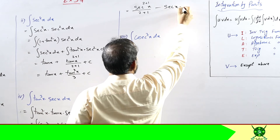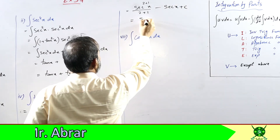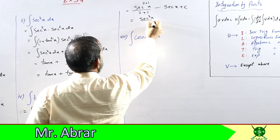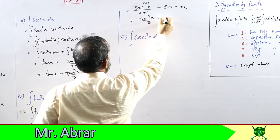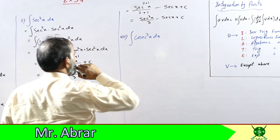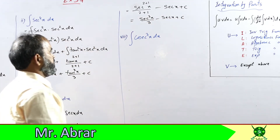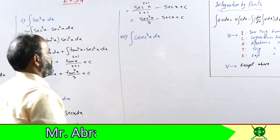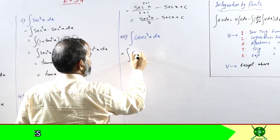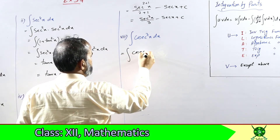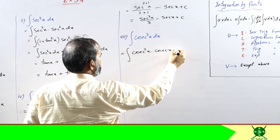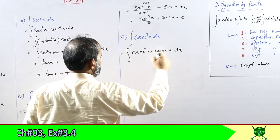Final form: sec³(x)/3 minus sec(x) plus c। Part 8 में भी cube है तो cube को break कर रहा हूँ: cosec²(x) into cosec(x) dx।